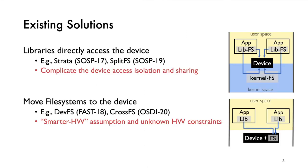Previously, two categories of work tackle this problem. The first type is the library-based approach, where libraries are capable of accessing the device in application address space, reducing the overhead in device access paths. However, exposing the device to untrusted applications complicates device permission management, isolation, and sharing. An opposite direction is to move the entire file system into the device. Despite performance, this work usually assumes the device has better computing capability and may be limited by hardware constraints.